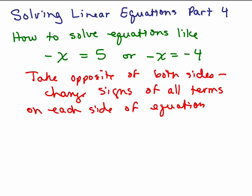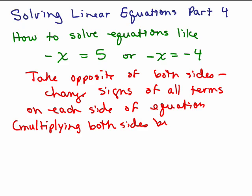Now when you do this — by the way, this is like multiplying both sides by negative 1. And this is another property of equality: you can multiply both sides of an equation by the same number, and we'll be doing that in another video. But for now, let's work on this.